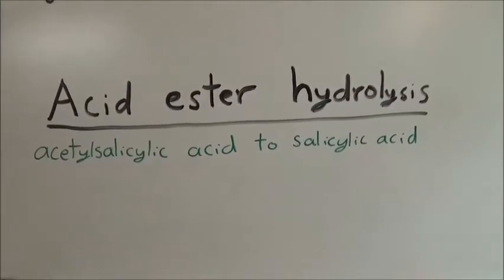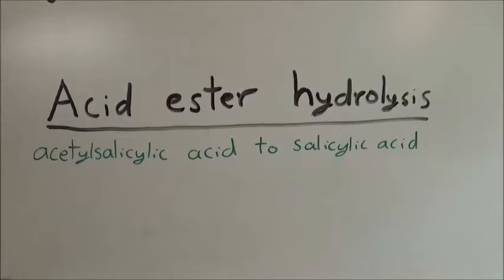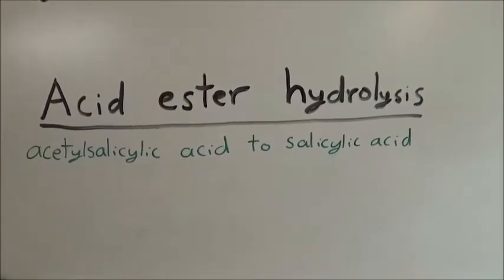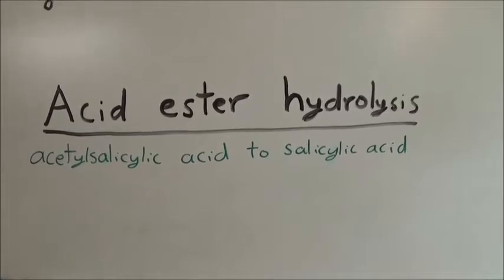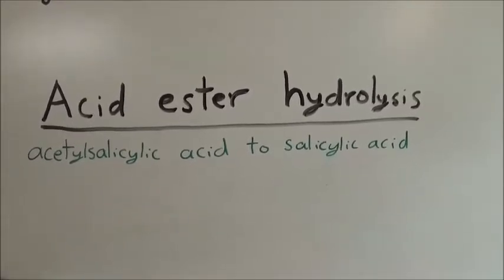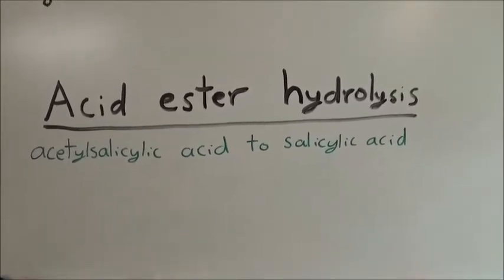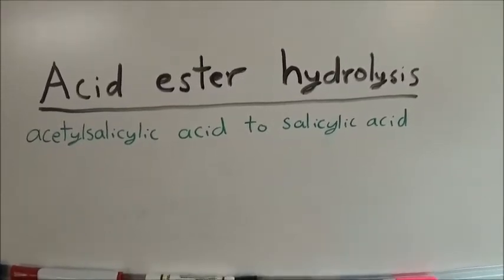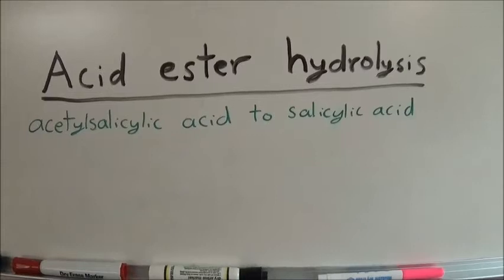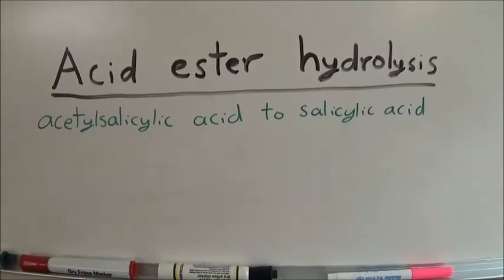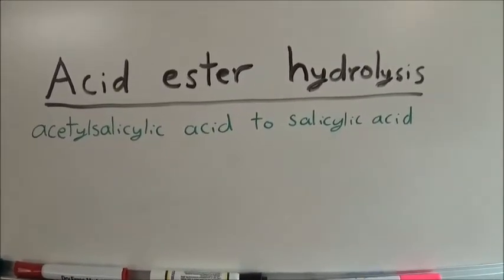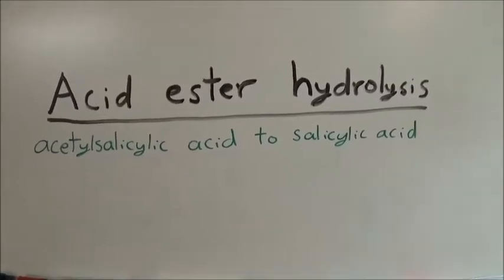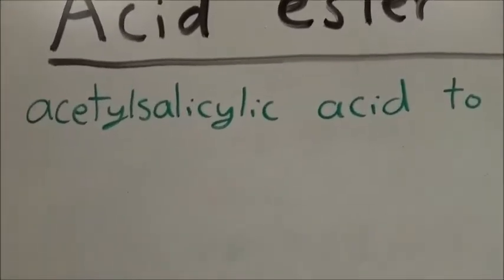Hello everyone and welcome to the lab. In this video, we're going to be doing an acid ester hydrolysis. As the name might suggest, we are going to be hydrolyzing an ester using an acid catalyst. We are going to convert acetylsalicylic acid into salicylic acid. Acetylsalicylic acid is commonly found as aspirin, and in this video I'm going to refer to it as ASA because that is quite a mouthful.